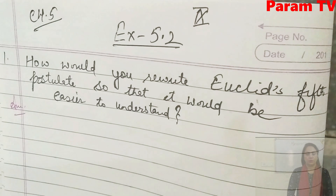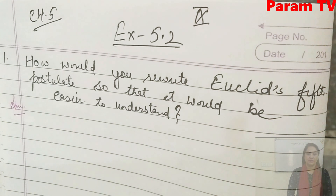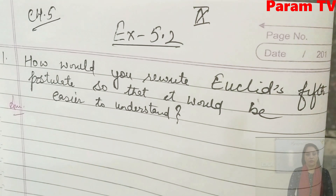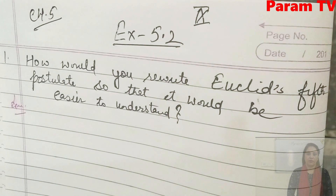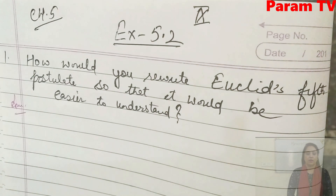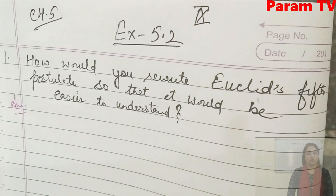The first question is about how you would rewrite Euclid's 5th postulate so that it would be easier to understand. Recall the 5th postulate — if you forgot, go to the previous video where I have defined axioms and postulates and explained them in simple language. So let's see it in detail.